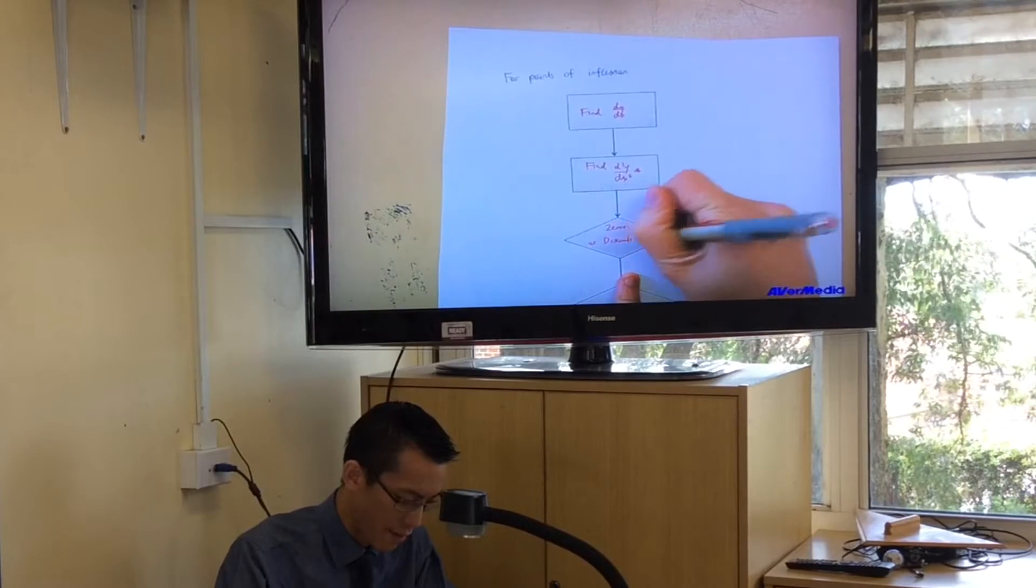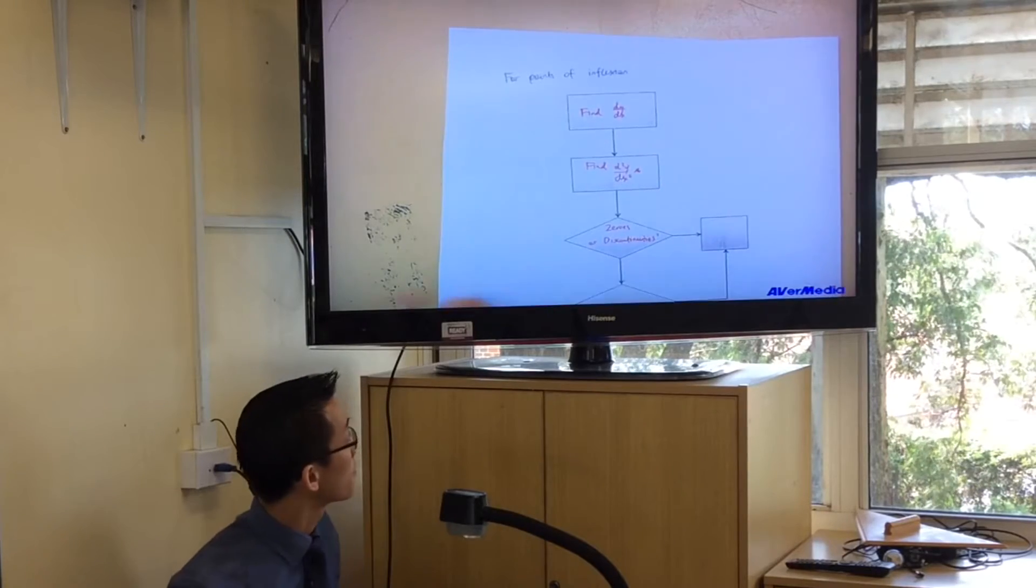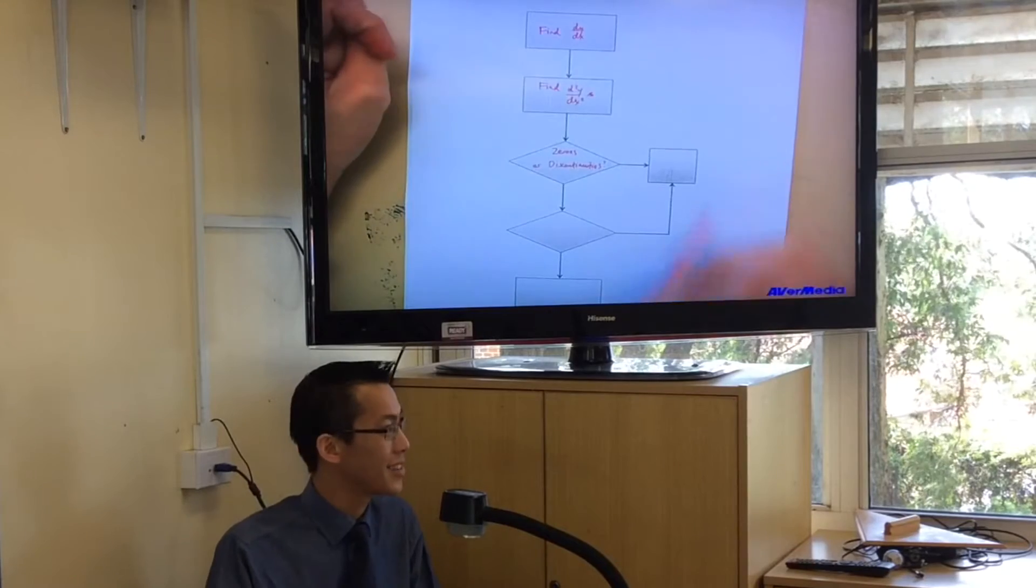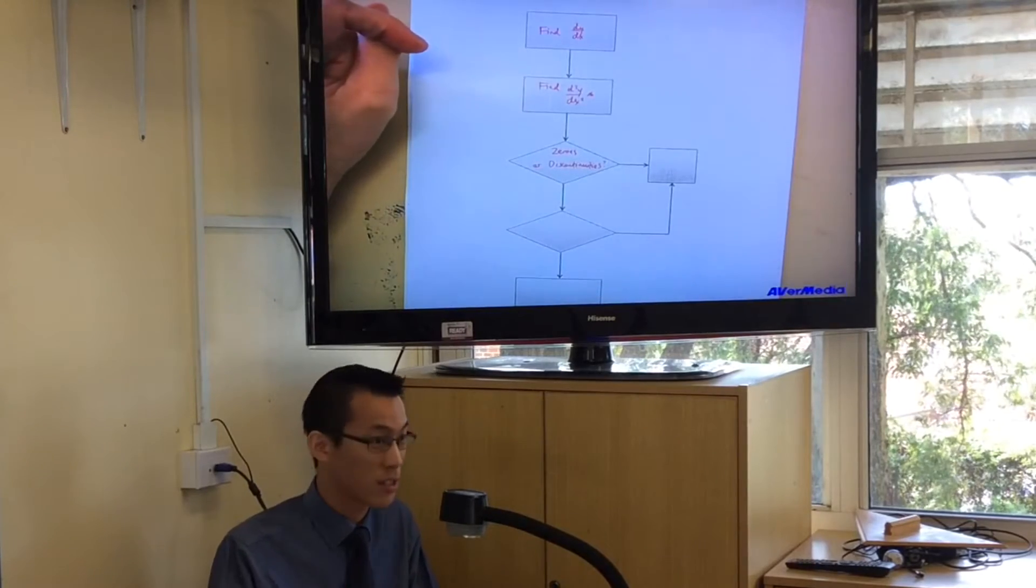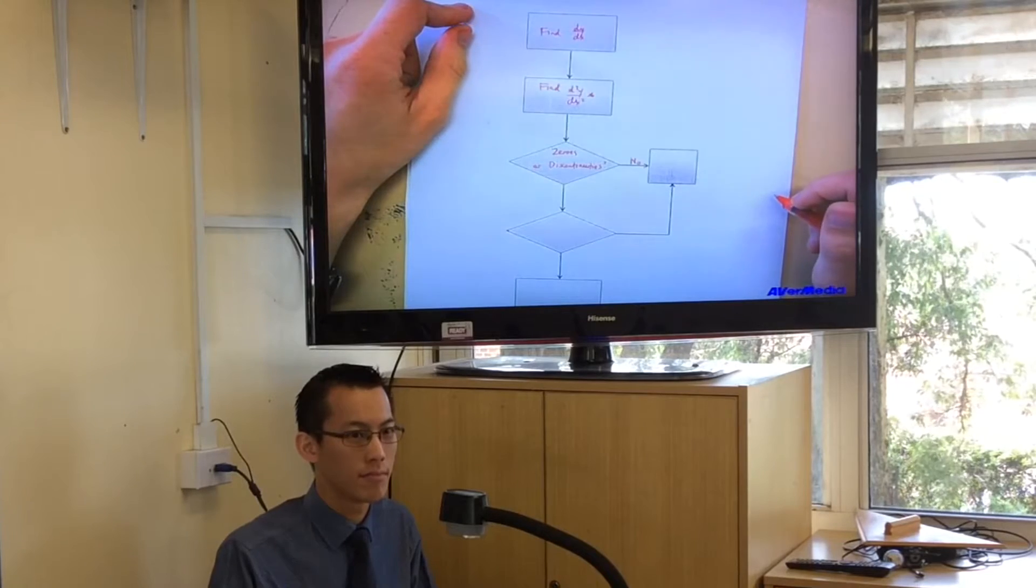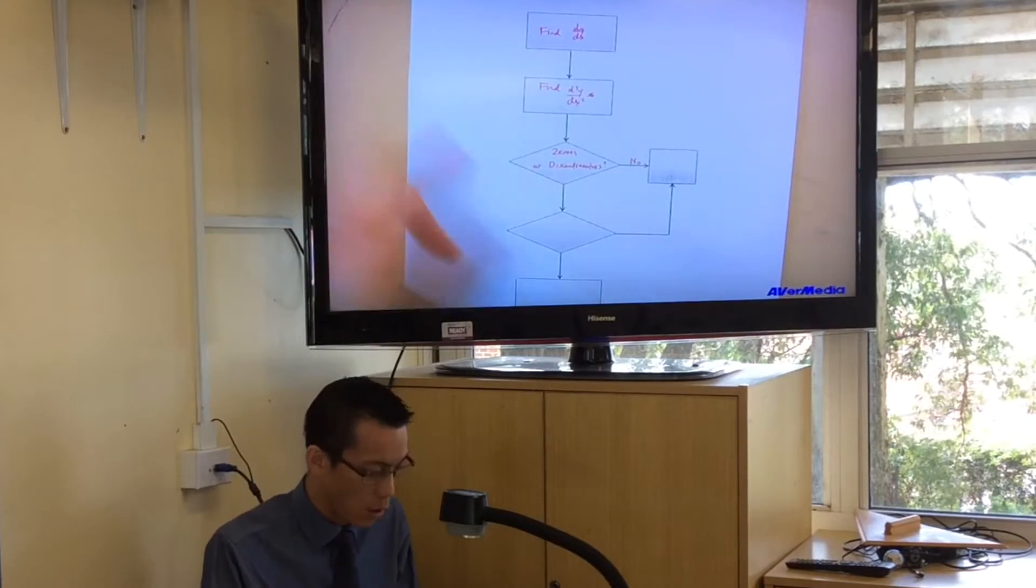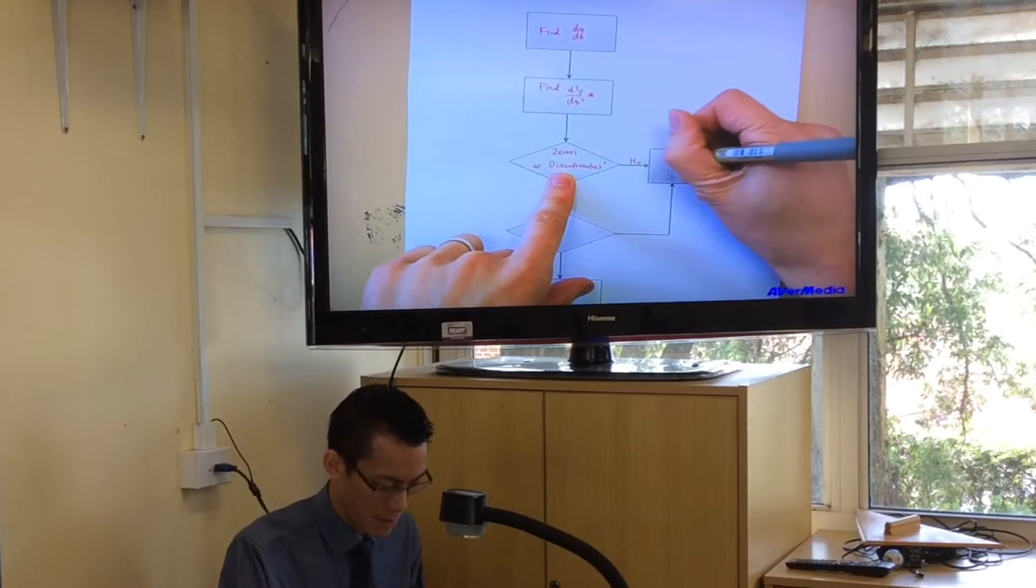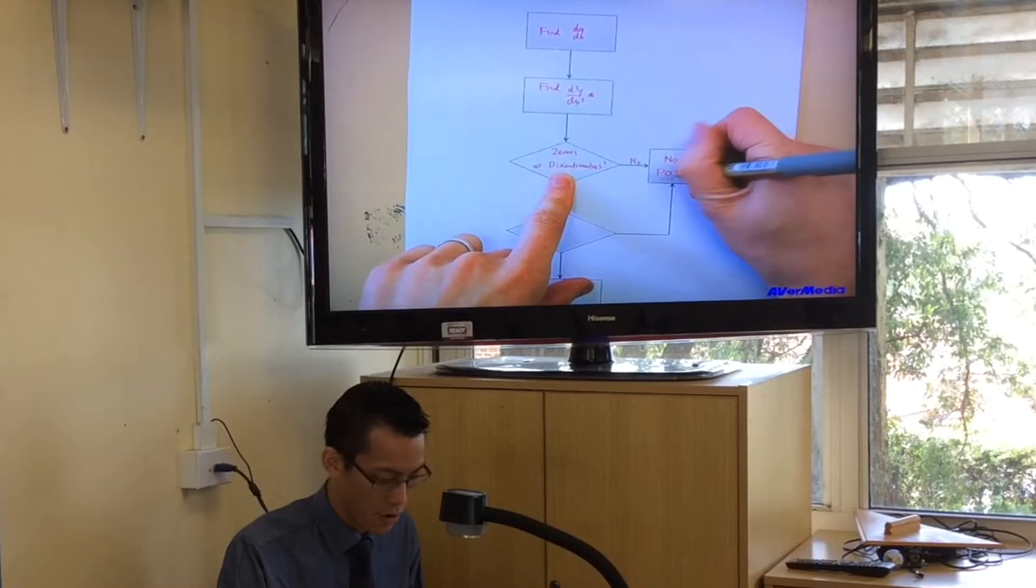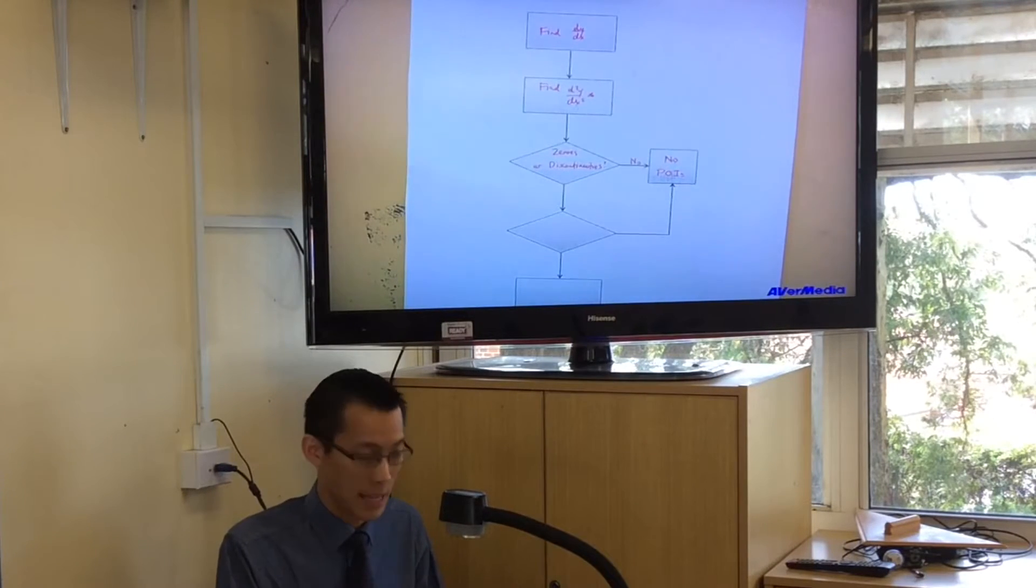Now, if the second derivative is never zero and there are no discontinuities, what does that mean? It means there can't possibly be any points of inflection because they all happen here. So I'm going to say there will be no points of inflection. That's an easy case.